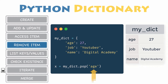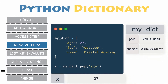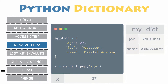If you know the key of the item you want, you can remove a particular item in a dictionary by using the function POP. This function removes an item with the provided key and returns its value. For instance, this example removes the key age and returns its value.